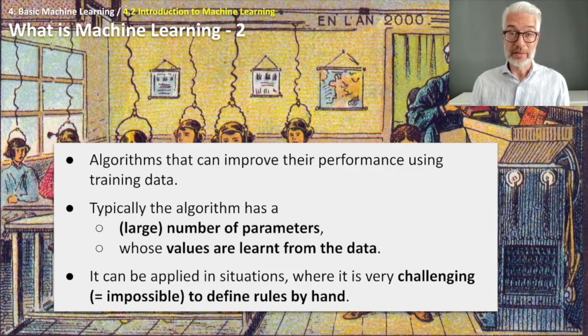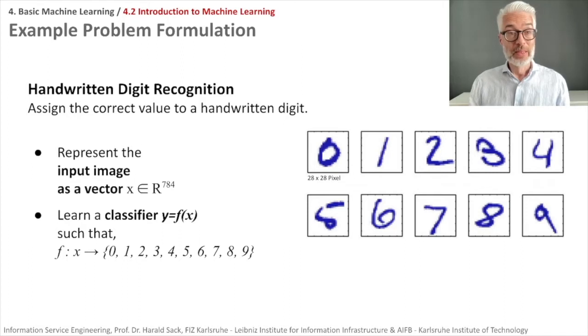How do we formulate a machine learning problem? Let's take handwritten digit recognition as an example. We have the image of one of these digits and we want to assign the correct value to the handwritten digit.